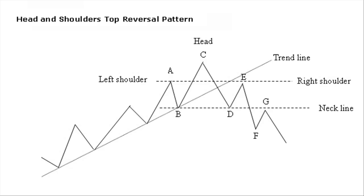The head and shoulders pattern is confirmed when the price falls below an up-trending neck line, or after the right shoulder in case of a down-trending neck line. In approximately half of the cases there is a bounce back to the neck line G, or even up to between the neck line and the right shoulder.